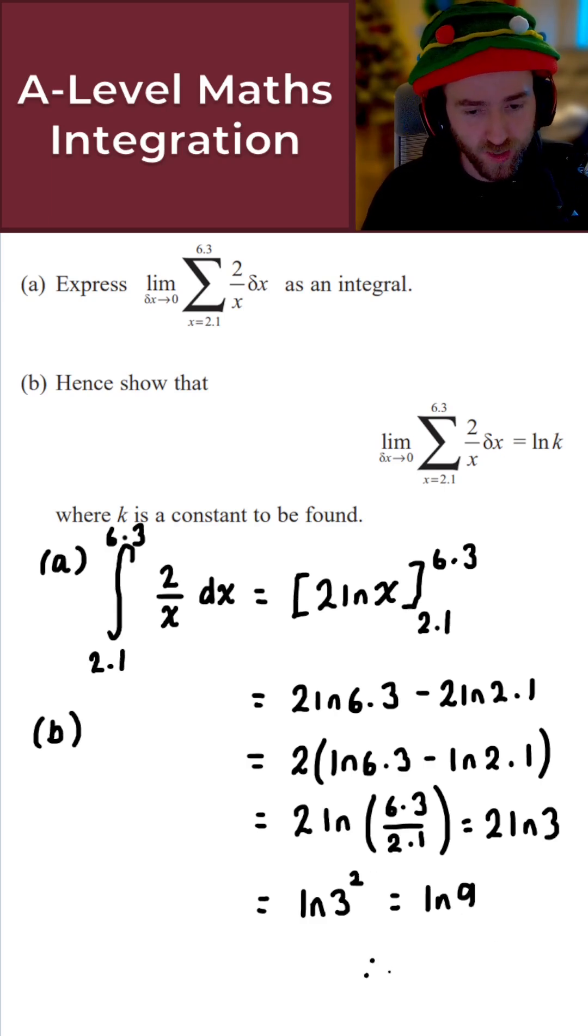We're pretty much done. Therefore k is simply 9. Perfect. There we go. That gives us the solution to today's question.